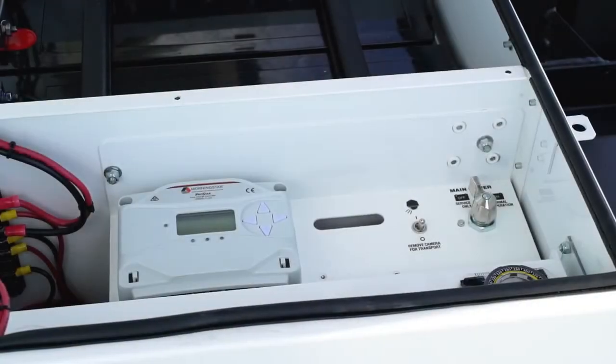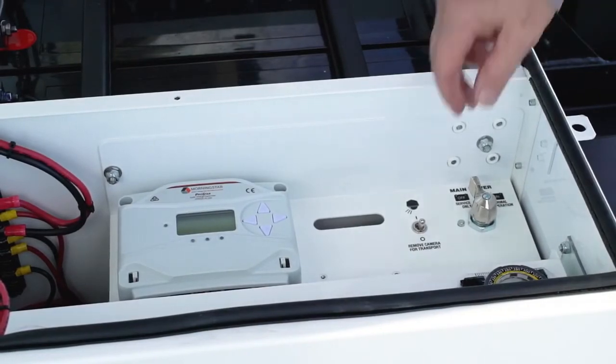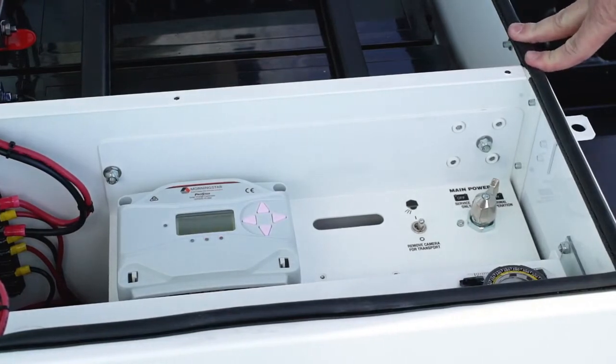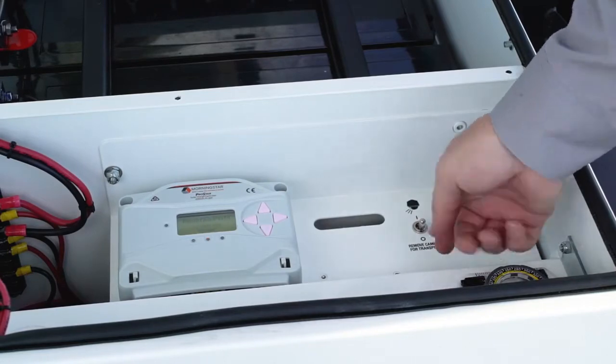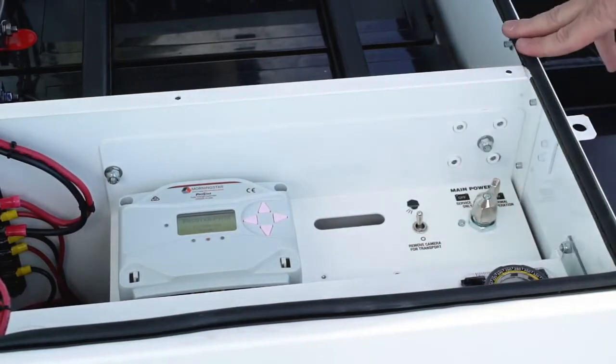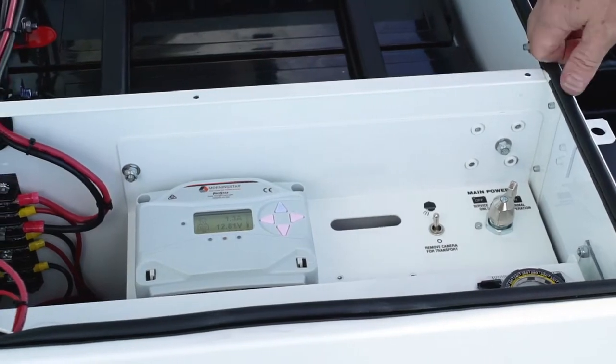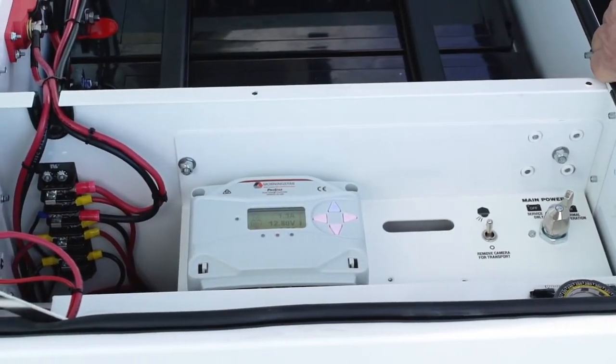Let's turn on the system. Now we have a main power switch here for the batteries and the solar panels. We turn that on - we have batteries and solar panels now working. We have a camera switch, off-on, so we're turning our cameras on. Now we're booting up our Morningstar solar charge controller.